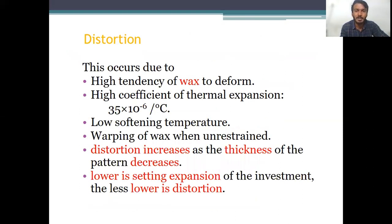Coming on to distortion. From the name itself, the only thing that can get distorted or change its shape due to some pressure during the casting procedure is actually the wax. So distortion is basically related to wax. Why is it occurring to wax? Because it is due to the high tendency of the wax to deform — its high coefficient of thermal expansion.